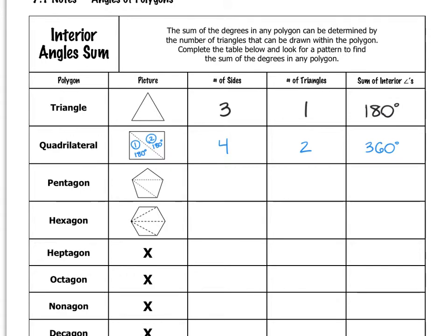Next, we have five-sided polygons, which are known as pentagons. You can see from the diagram that a pentagon can have three triangles drawn inside it. And if there are three triangles drawn inside a pentagon, then the pentagon must have 540 degrees for its sum of interior angles. A hexagon is a six-sided polygon, and from the diagram, you can see that there are four triangles drawn inside a hexagon, so the sum of the interior angles is 720 degrees.